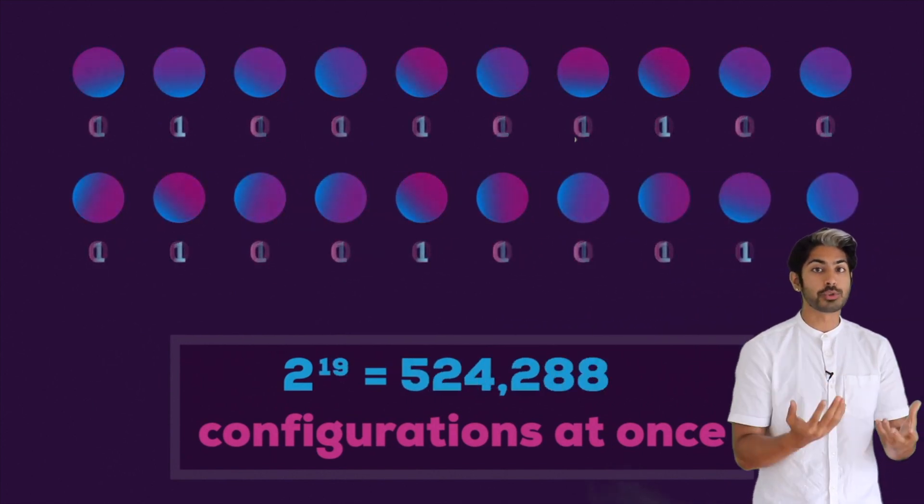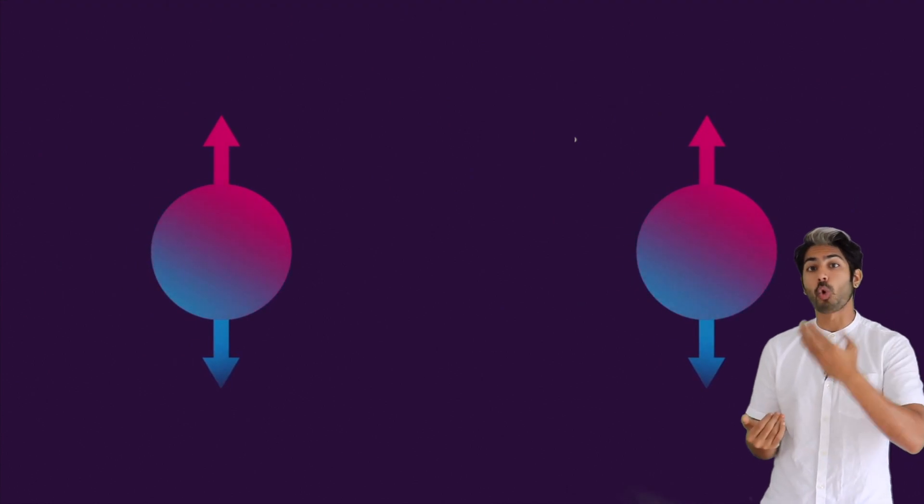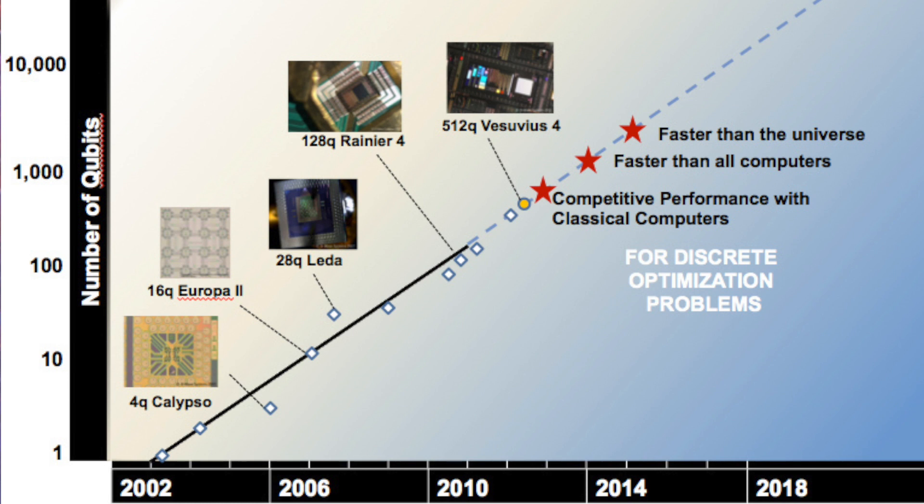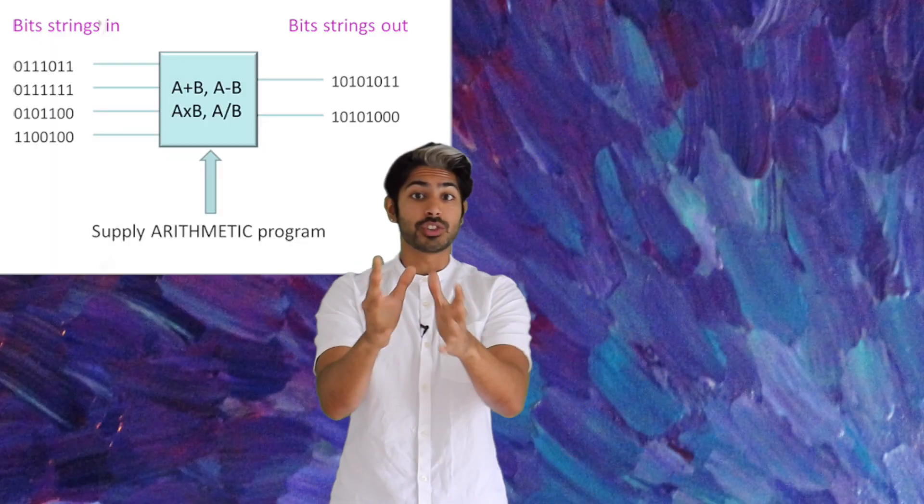What that means is that you can't just describe a system of several qubits using descriptions of individual qubits. You have to describe the correlations between qubits. And as you increase the number of them, the number of correlations grows exponentially. So for a system of just 300 qubits, you need more numbers than there are atoms in the visible universe to describe. Think about that for a second.